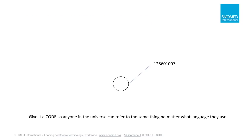We're going to give this thought a unique numerical code. This will be the handle that no matter what language or what country you're in, you can refer to this thought. So the words in America may be quite different than the words in France.